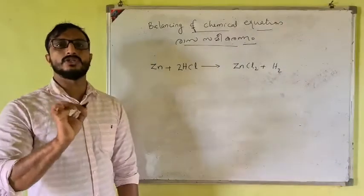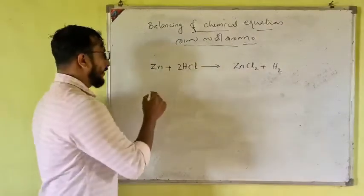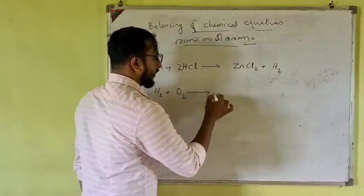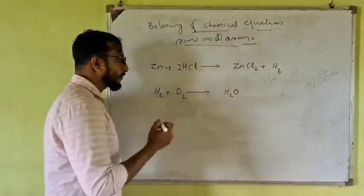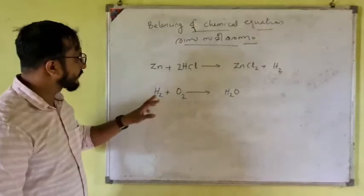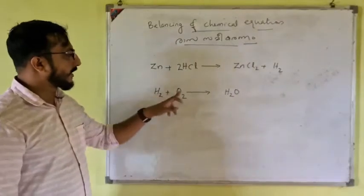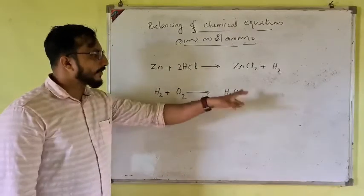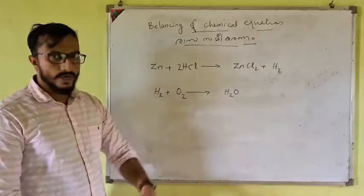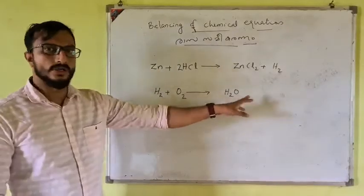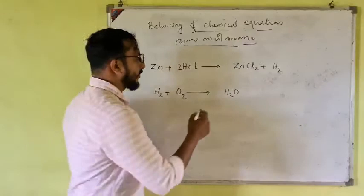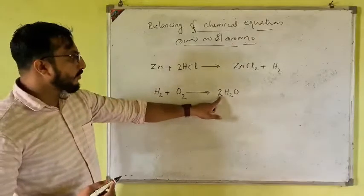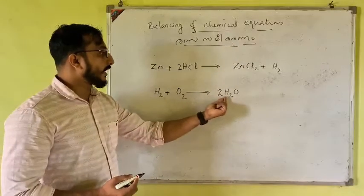Let me check another example: hydrogen and oxygen. We can add water — H2 reacts with O2. Hydrogen is 2 and there is oxygen. This gives 2 water molecules. This is the setup for balancing.